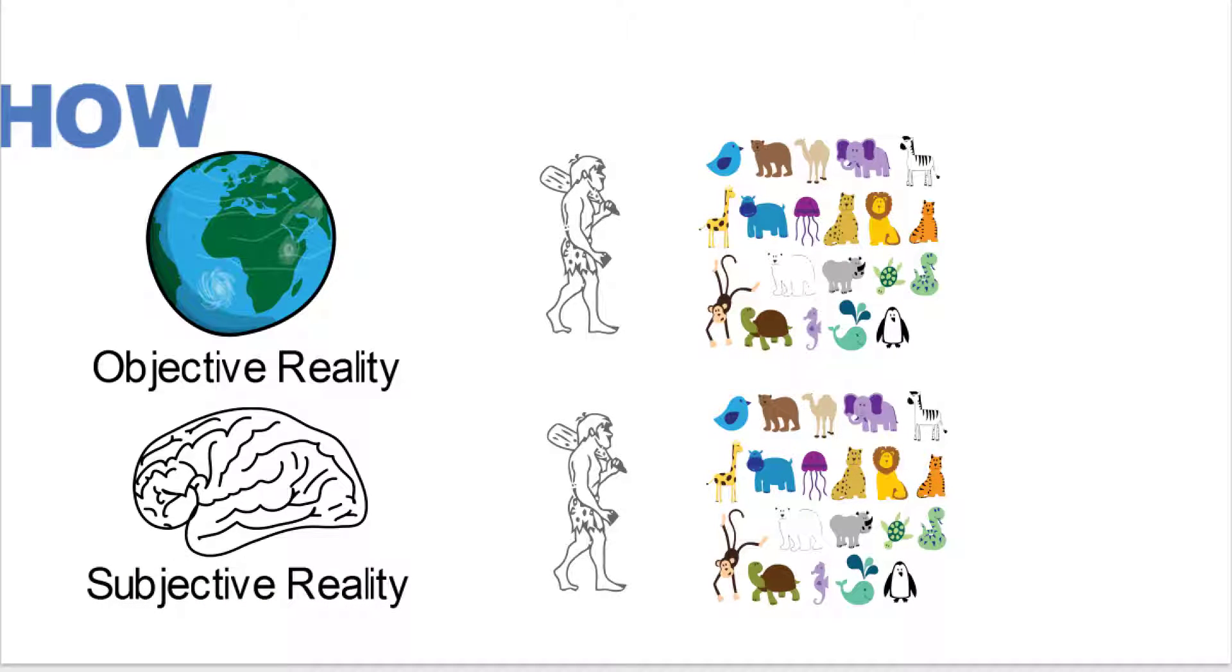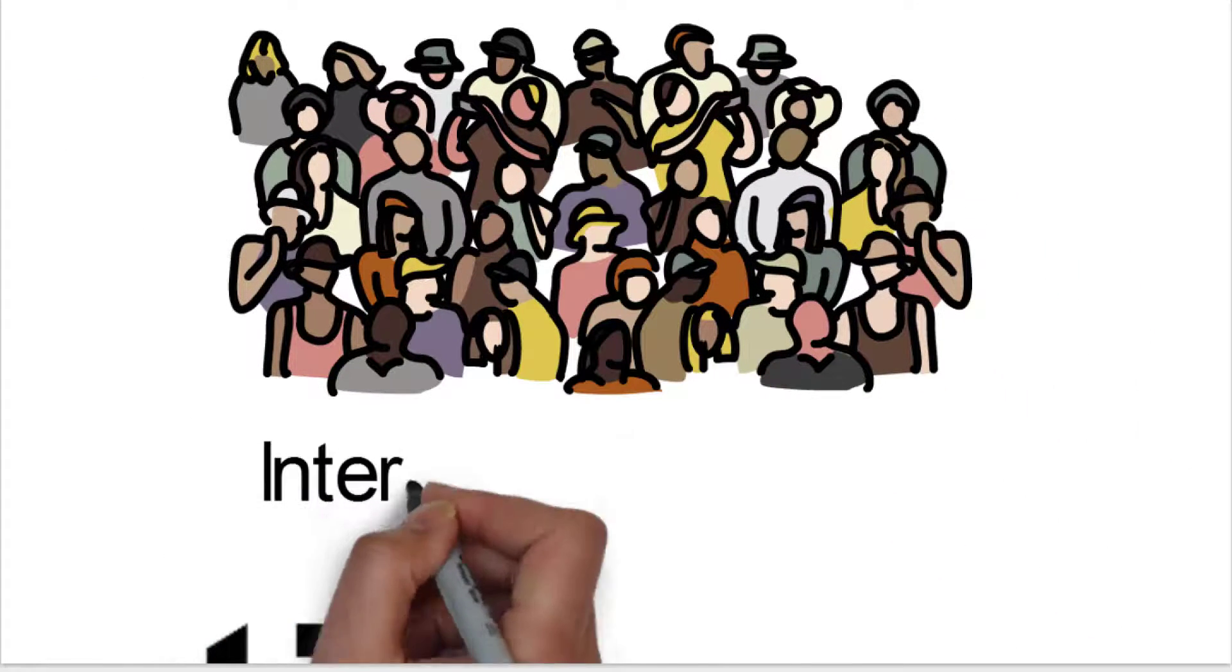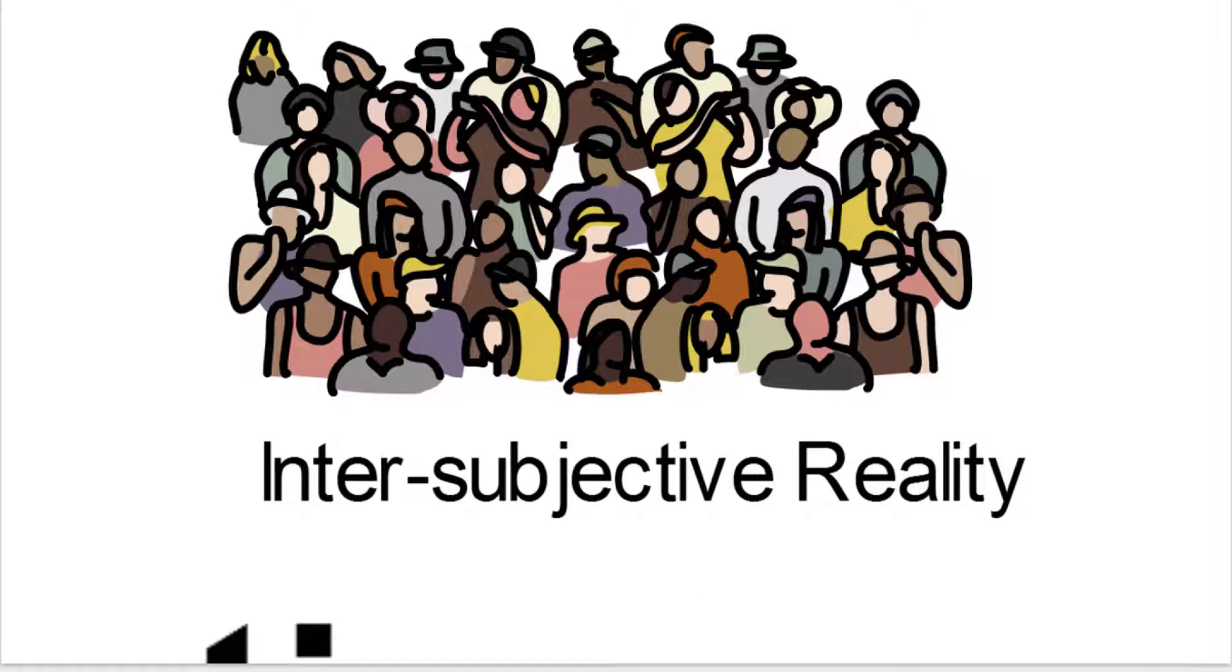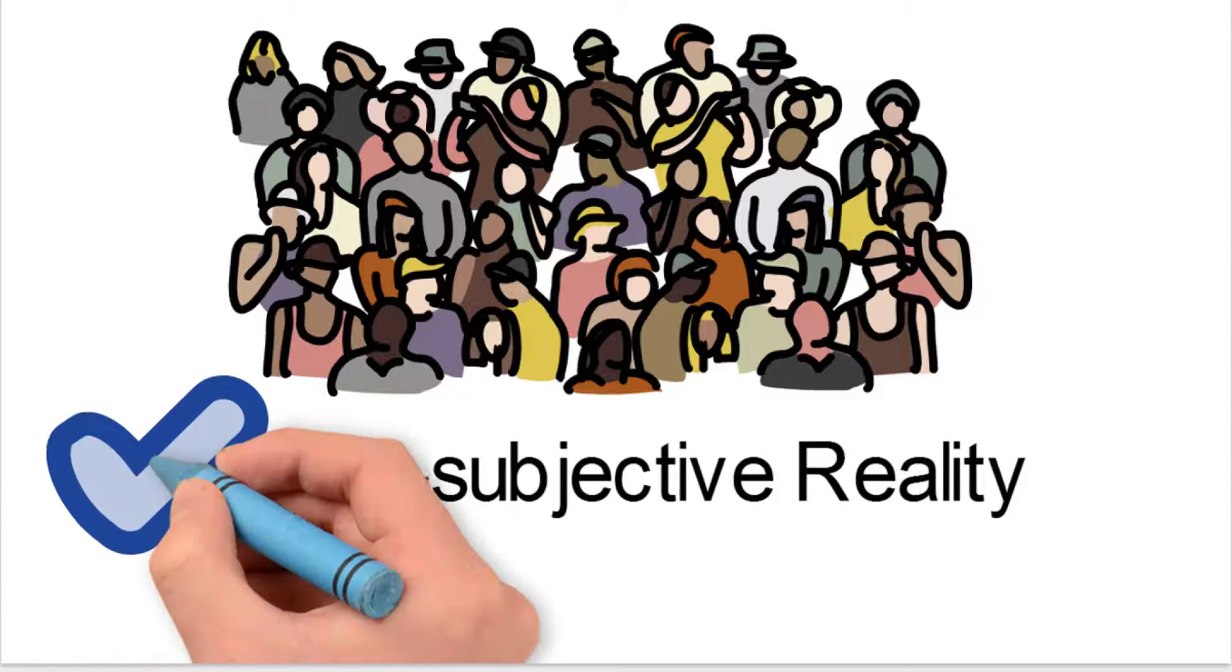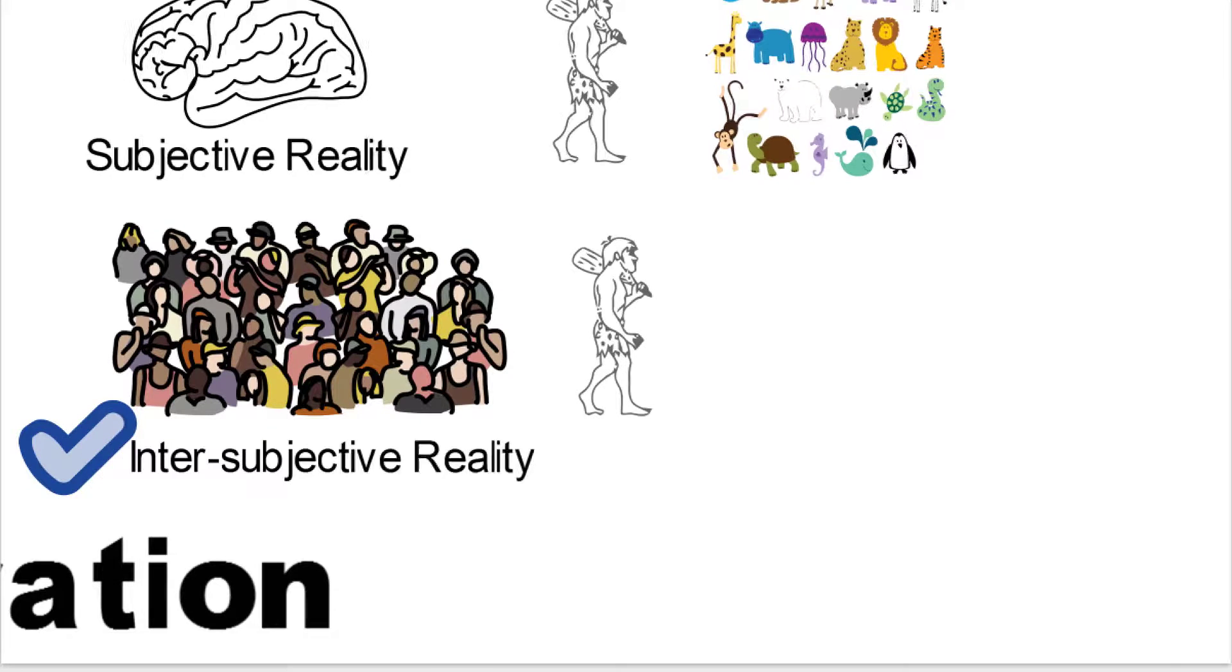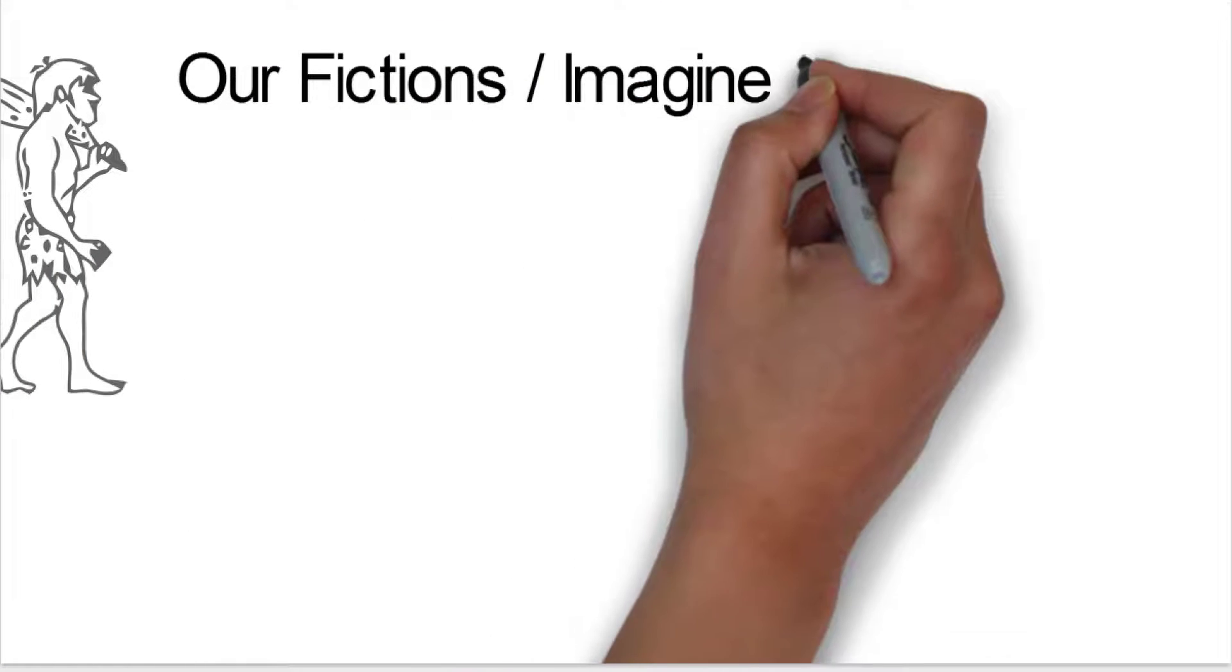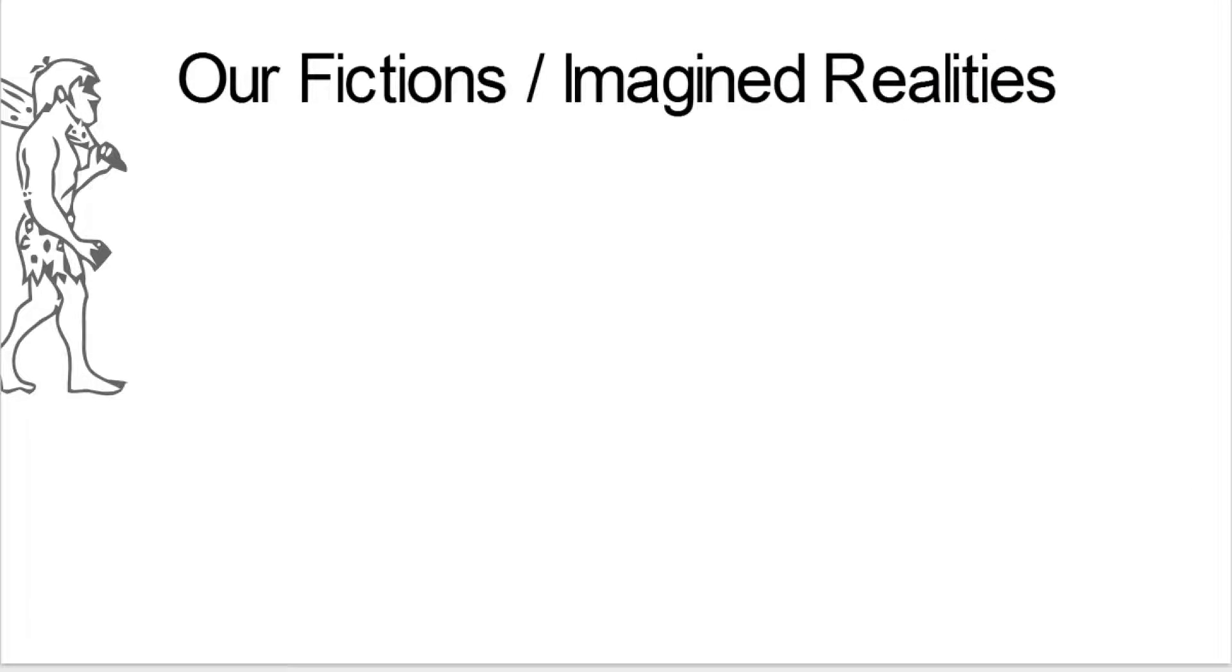Objective reality exists for both sapiens and the animals. And subjective reality, we talked about that, that exists for both sapiens and the animals. But the myths provide this inner subjective reality. And this inner subjective reality is really kind of a big differentiator for us. So sapiens are the only ones that have it. And it's in our fictions, and it's in our imagined realities.